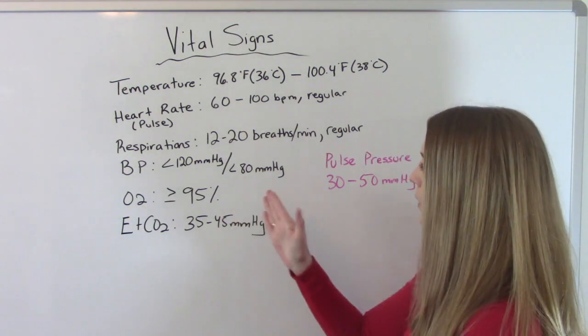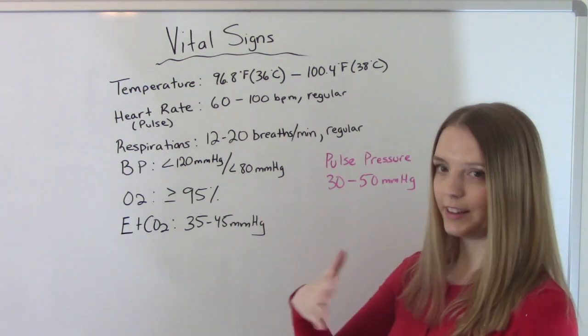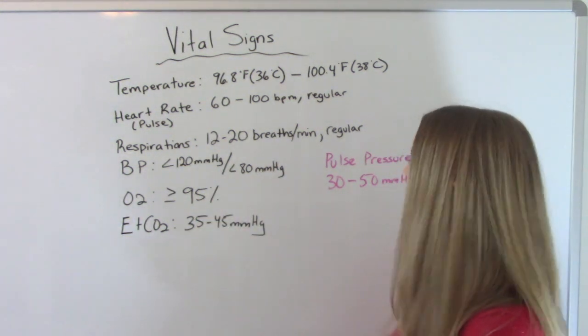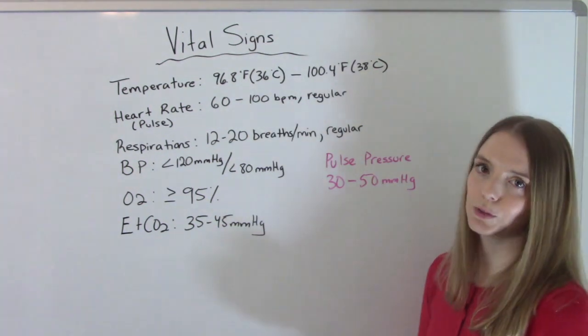Your respiratory rate, how fast you're breathing, how many breaths you're taking in in one minute should be between 12 and 20. And again, should be described as regular.